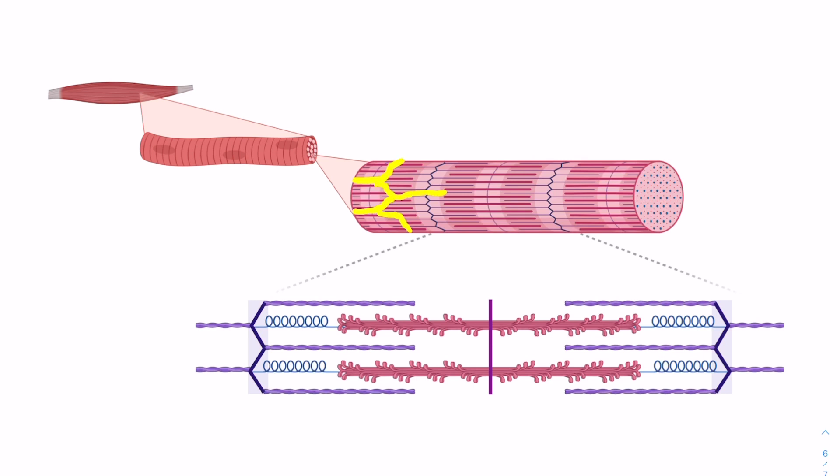And so on this myofibril here, I'm just scribbling over it in yellow. The scribbles represent the sarcoplasmic reticulum, or the SR here, is where calcium is stored within the myofibril.